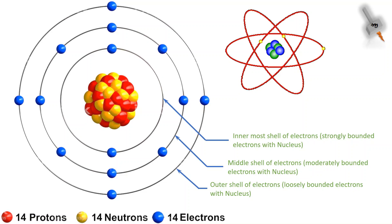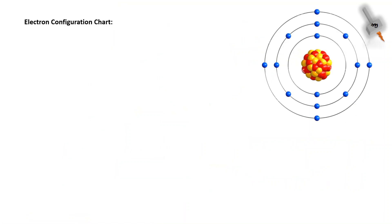Now moving on, let's look at the electron configuration chart of that silicon atom. The energy shell of an electron is divided into 4 subshells. The S shell can contain 2 electrons.